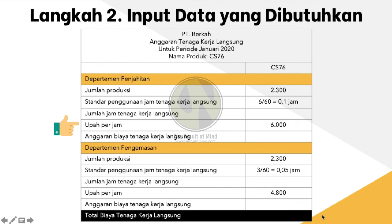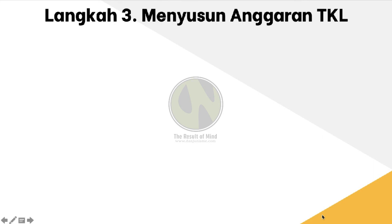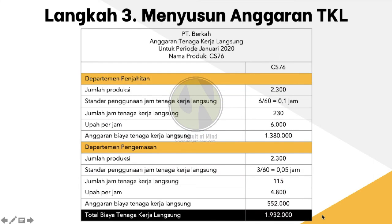Begitu juga untuk Departemen Pengemasan, kita tinggal inputkan sesuai informasi soal. Langkah ketiga, kita tinggal mengalikan informasi yang sudah kita input tadi. Untuk Departemen Penjahitan, diperoleh anggaran tenaga kerja langsung Rp1.380.000, sedangkan untuk Departemen Pengemasan adalah Rp552.000. Sehingga diperoleh total biaya tenaga kerja langsung PT Berkah untuk periode Januari 2020 adalah Rp1.932.000.